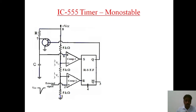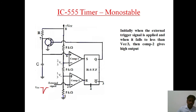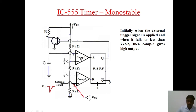Let us now see how a monostable circuit works. In the beginning, when the external input trigger signal is applied and when the voltage of the input trigger signal falls below Vcc/3, comparator 2 gives high output. At the same time, comparator 1 gives low output, because in the beginning there is no charge on the capacitor when power is just switched on. As there is no charge on the capacitor, the voltage across the capacitor is 0, and therefore the voltage at pin number 6 is 0.